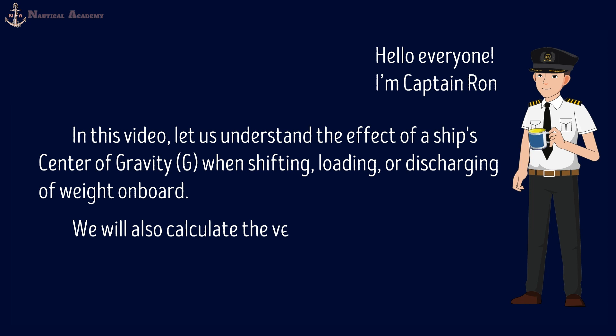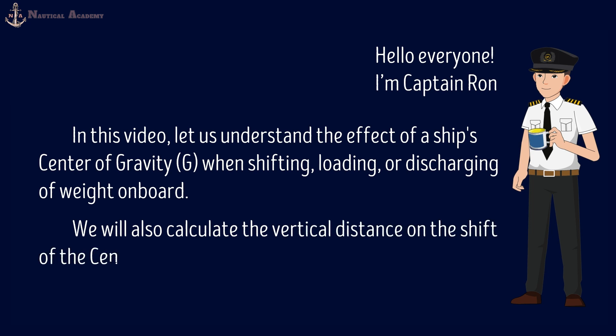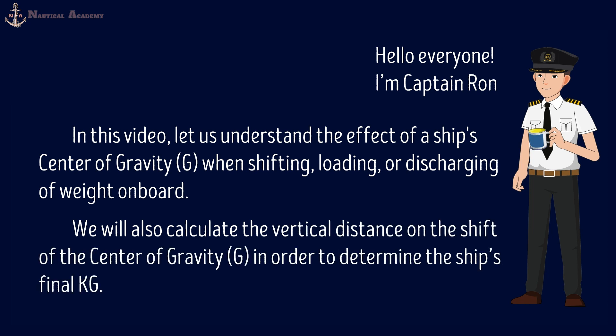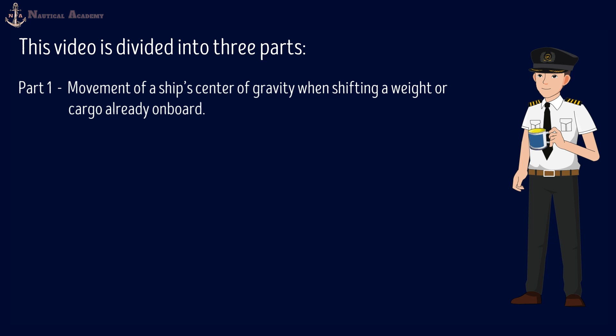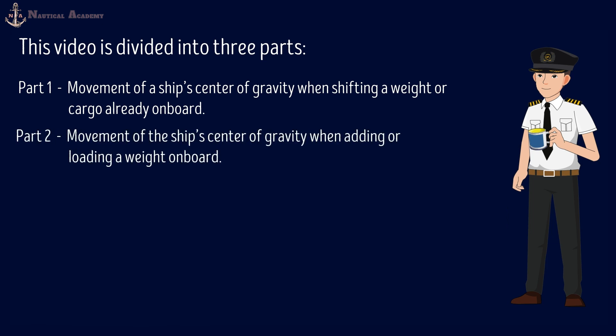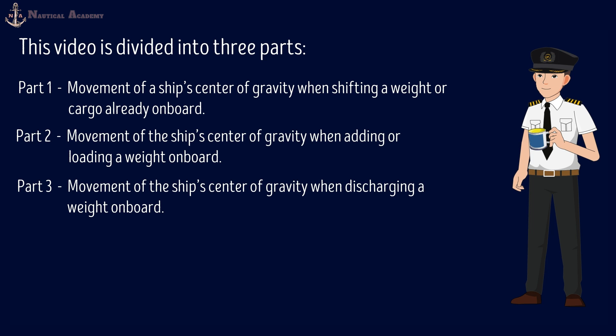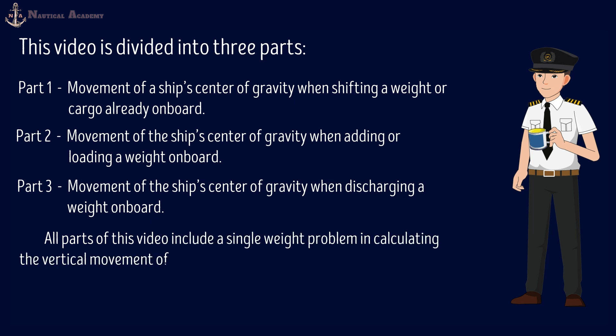We will also calculate the vertical distance on the shift of the center of gravity in order to determine the ship's final KG. This video is divided into three parts. Part 1 covers the movement of a ship's center of gravity when shifting a weight or cargo already on board. In Part 2, it covers the movement of the ship's center of gravity when adding or loading a weight on board. And in Part 3, it covers the movement of the ship's center of gravity when discharging a weight on board. All parts include a single weight problem in calculating the vertical movement of the ship's center of gravity and determining the final KG.